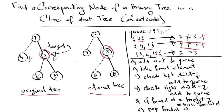Now we look at the front element, which is three. Three has two children: sixteen and nineteen, so we add sixteen and nineteen to the queue. Then we pop out three and check whether three is equal to our target. They are equal to each other, which means we return the reference from our cloned tree.